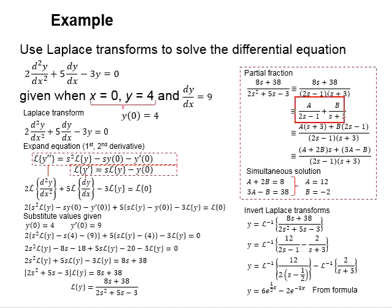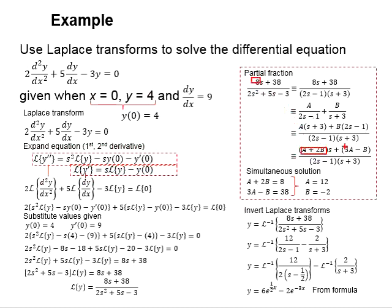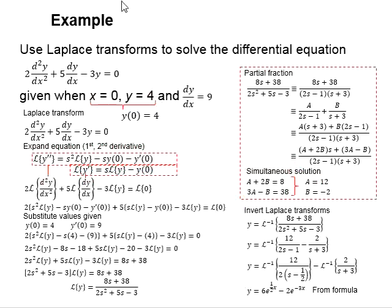Separate it as A divided by one component and B divided by another. Combining the two functions and comparing with the original function, you get: A plus 2B equals 8 and 3A minus B equals 38. Solving this simultaneous equation, you obtain A equals 12 and B equals negative 2.